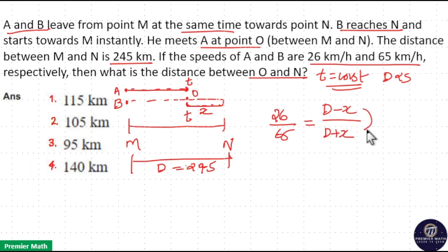Now if you take the difference in ratio, D plus X minus D minus X equals 2X, and 65 minus 26 equals 39. This is 39 parts because we are taking the difference in ratio.